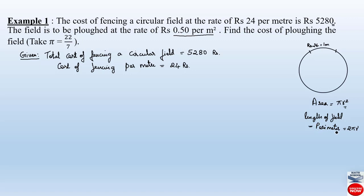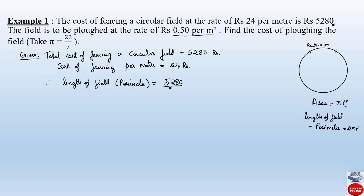If we know the perimeter or circumference of the circle, the radius can be easily calculated, and that radius can be used in the area formula to find the total area. Therefore, the length of the field or its perimeter equals the total fencing cost divided by the per-meter cost, that is 5,280 divided by 24.